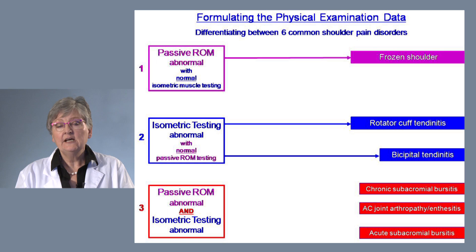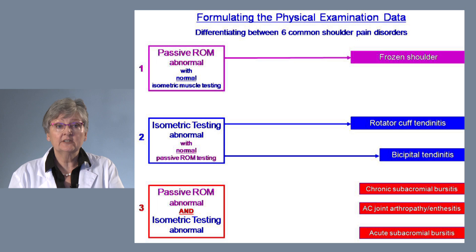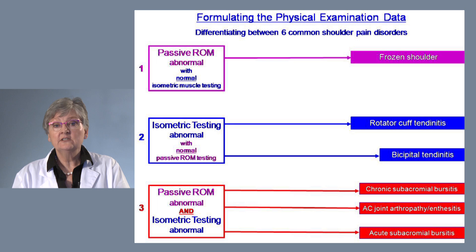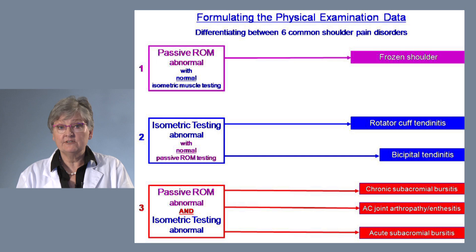When it comes to isometric muscle testing being abnormal with normal passive range of motion, we can diagnose rotator cuff tendinitis and bicipital tendinitis. The third group is where both passive range of motion and isometric testing are abnormal. This is where chronic subacromial bursitis, acute subacromial bursitis, and the AC joint arthropathy or enthesitis fit in.